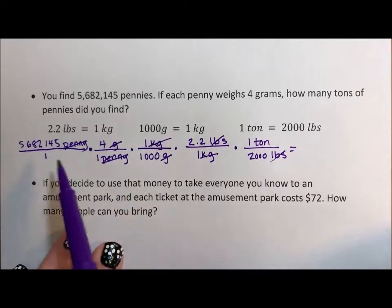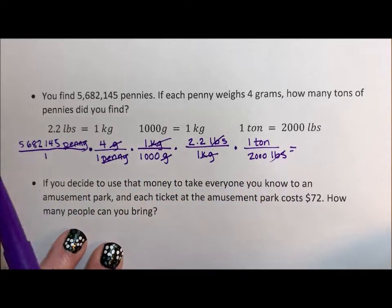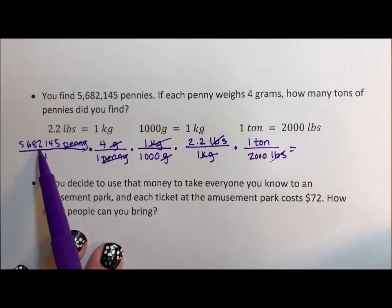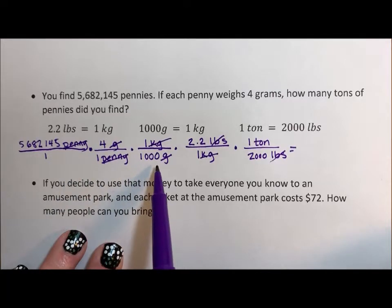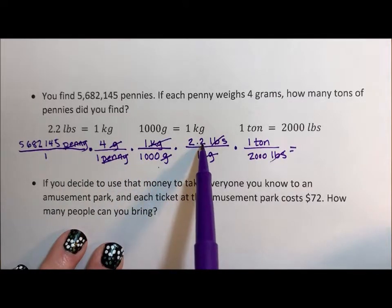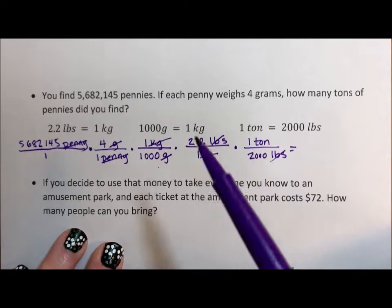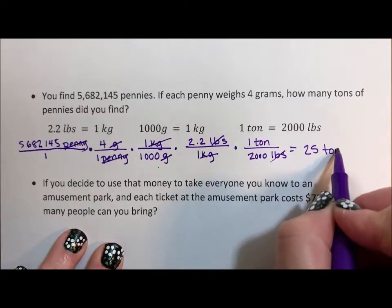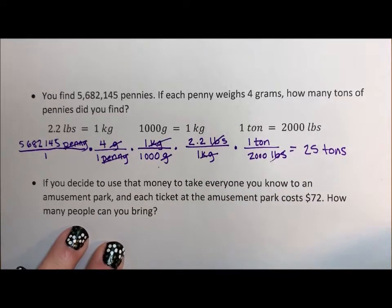When we put this into a calculator, every number in the numerator multiplies and every number in the denominator divides. So you enter: 5,682,145 times 4 divided by 1,000 times 2.2 divided by 2,000 equals — and you get 25 tons. So nope, we're not putting that in our back pocket. That's a little more than we can carry.